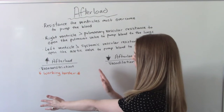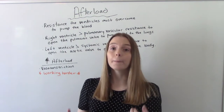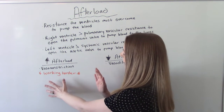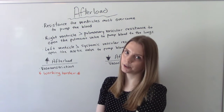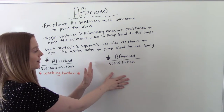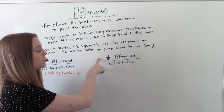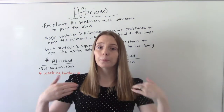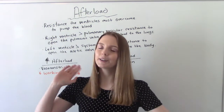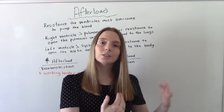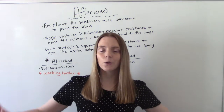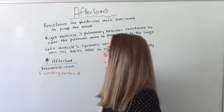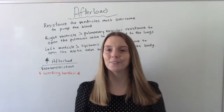Things that increase and decrease afterload really have to do with dilation and constriction. To increase afterload: vasoconstriction — this could be hypertensive disorders, or maybe we want this and put the patient on a medication to cause it. When afterload is increased, the heart is working harder. The opposite is vasodilation, which can decrease afterload — something we might want depending on what's going on with the patient. Preload and afterload are important because they affect stroke volume, and heart rate times stroke volume equals cardiac output. We want good cardiac output so blood is distributed to the body; low cardiac output means not enough blood and oxygen to our tissues.